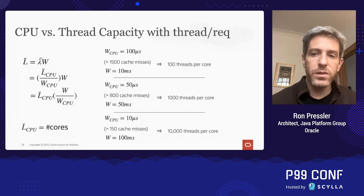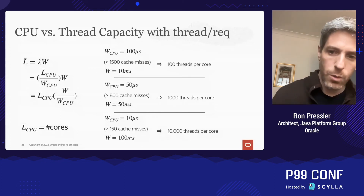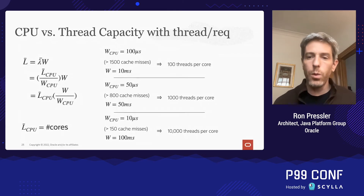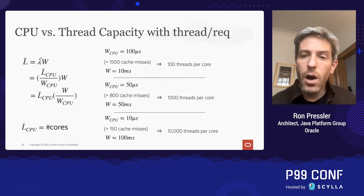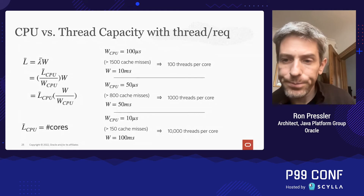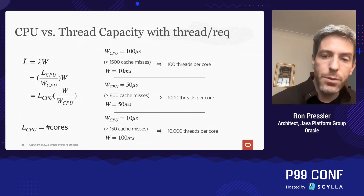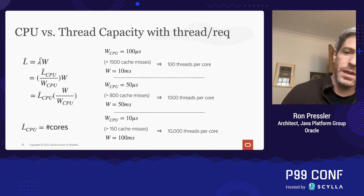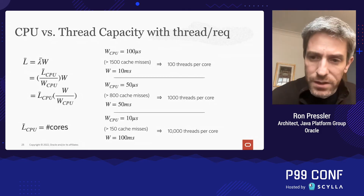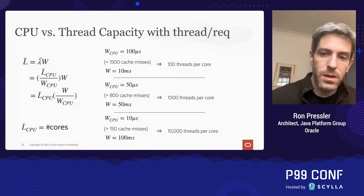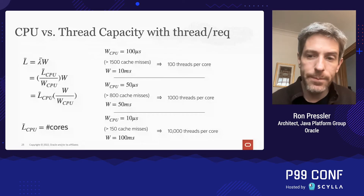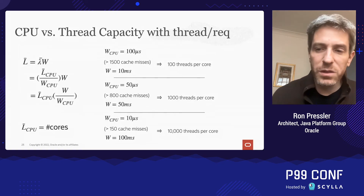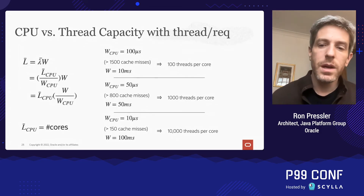So how many threads do we need to utilize the resources on the server? If a request consumes 100 microseconds of CPU time on average — which is quite high — and the overall duration of the request is 10 milliseconds — which is quite low considering it's the sum of all service and database call latencies — then we'd need 100 threads for every core of CPU we have. Conversely, if we have only 30 threads per core for a total of about 900 threads, the server will reach its maximum capacity at merely 30% CPU utilization. In other scenarios, that number could be as high as 1,000 or even 10,000 threads per core required to make good use of the hardware.